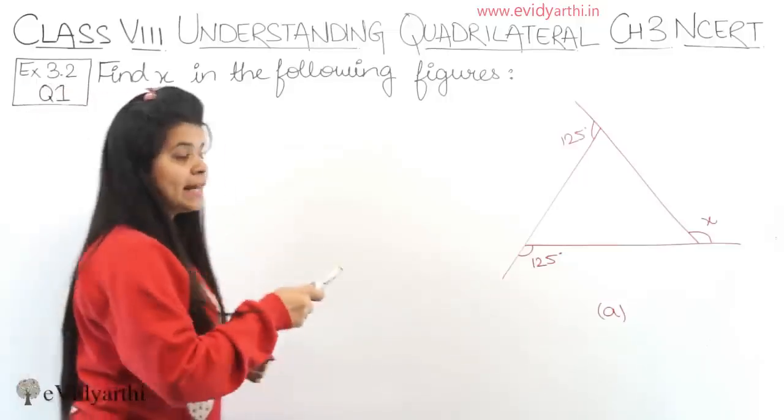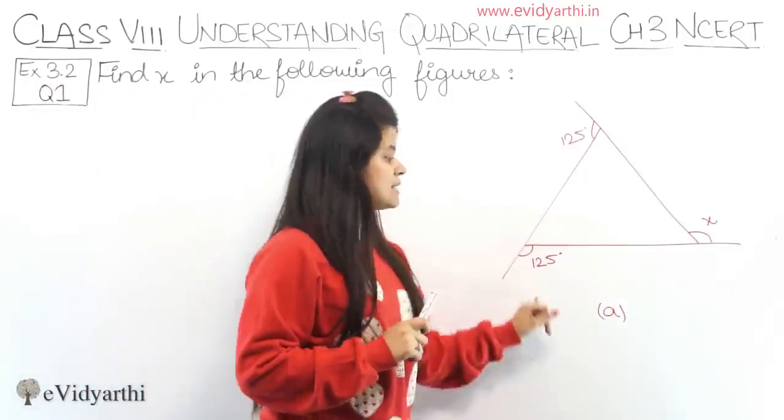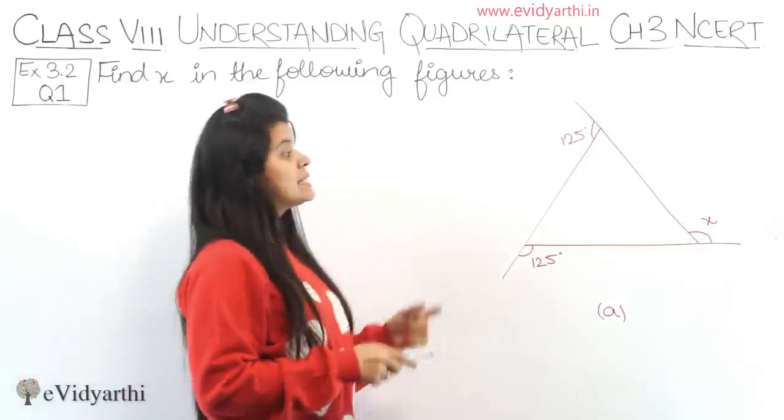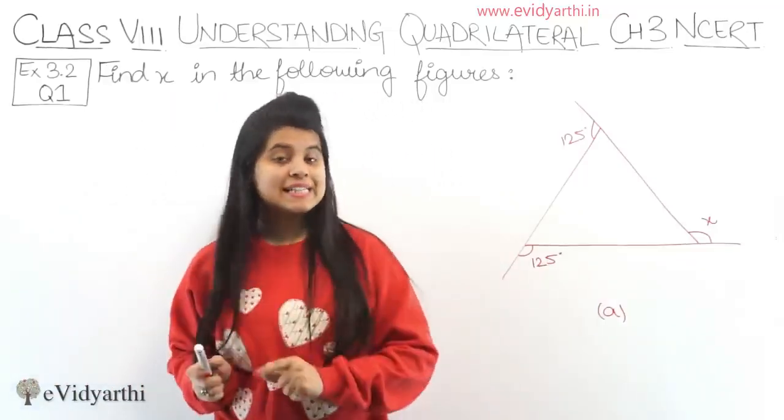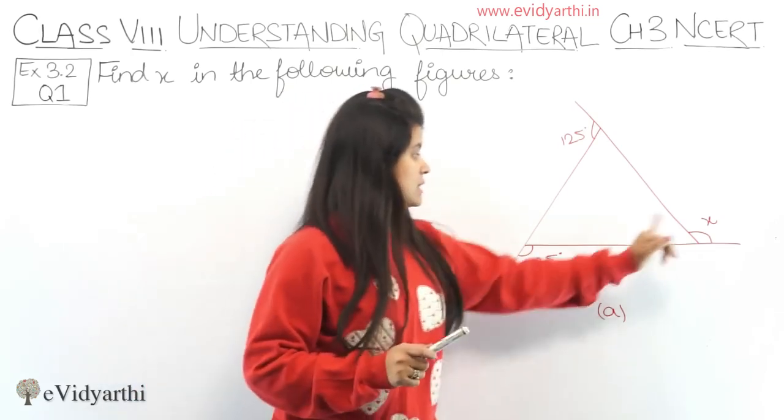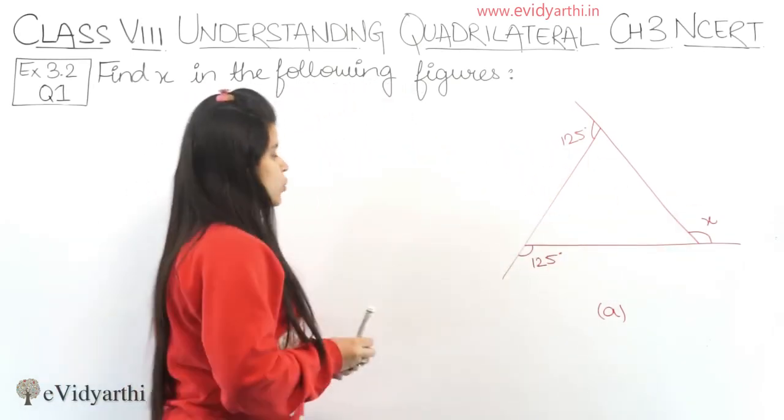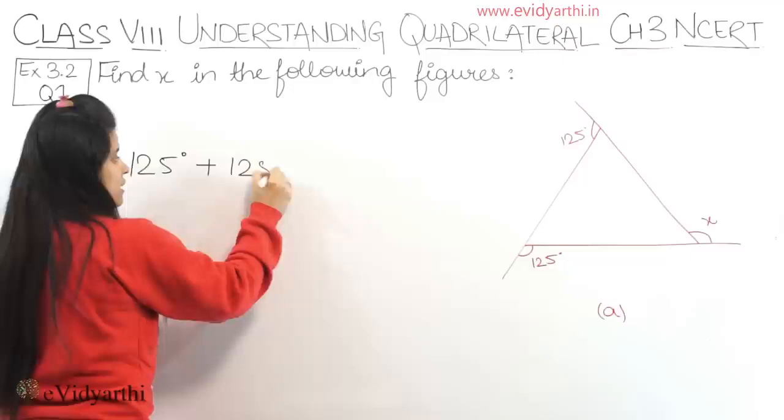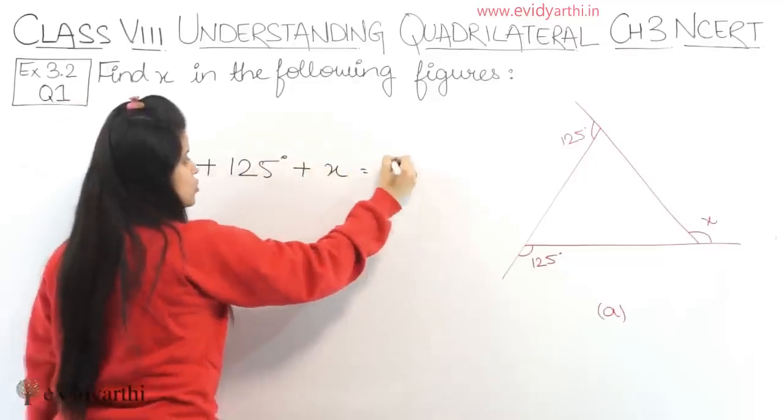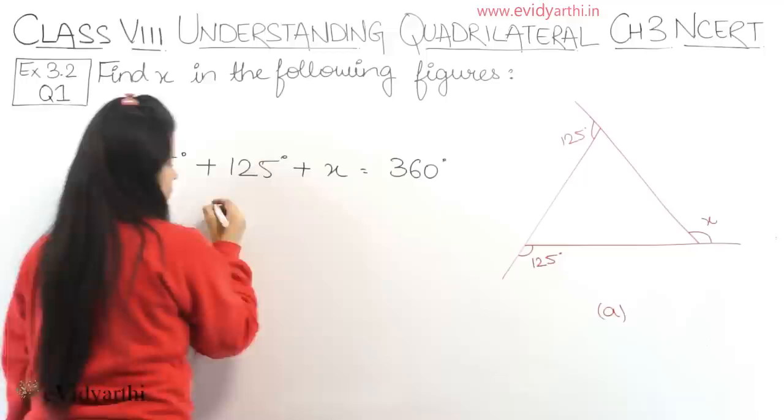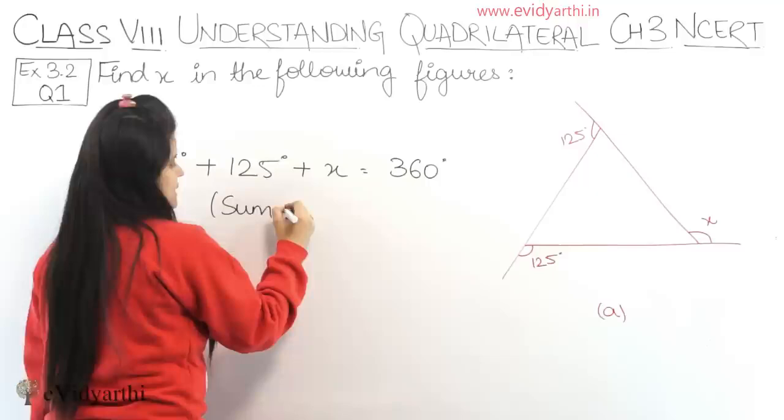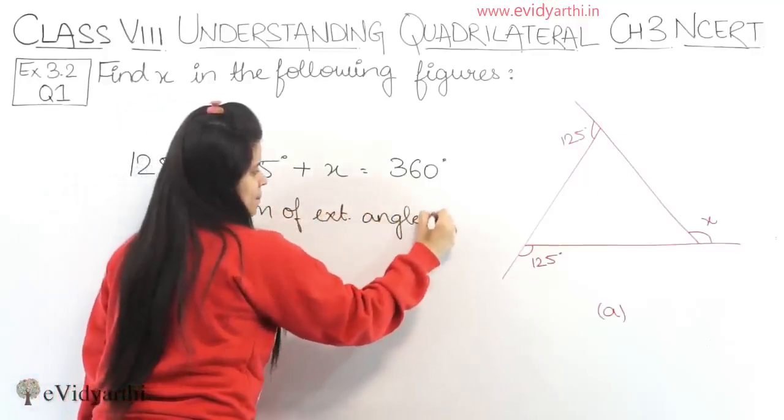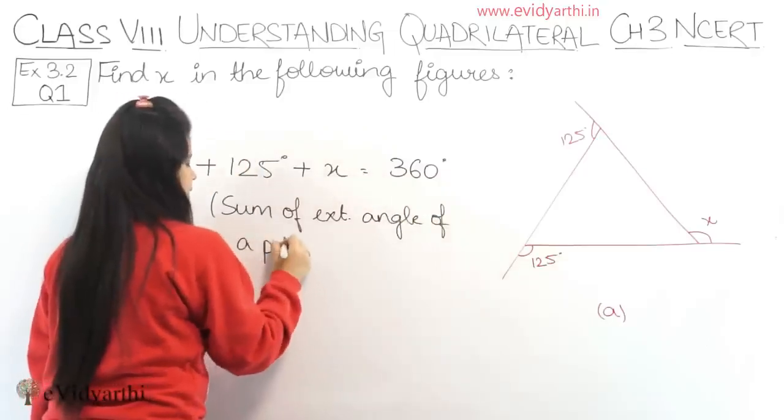We can see x is our exterior angle and the angle given is also our exterior angle. We have discussed the property in the introduction that says the sum of measure of exterior angles of a polygon is 360 degrees. So we can write it as 125 degrees plus 125 degrees plus x equals 360 degrees. Why? Because of the property that says sum of exterior angles of a polygon is 360 degrees.